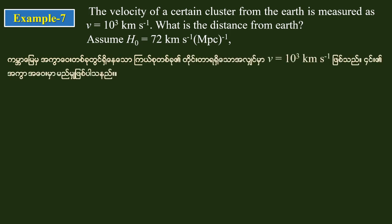So v is equal to 10 to the power 3 kilometers per second. We are using H₀ equal to 72 km per second per megaparsec.